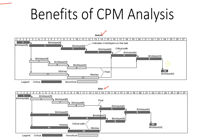Here you can see the before scenario: the project was completed within a 24-week period. But in the after situation, we can see that the project is being completed in a 22-week period. So one obvious difference is that the project manager has saved two weeks of the total project duration.